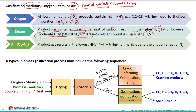When air is used as the oxidizing medium — a mixture of oxygen and nitrogen — the product gas results in the lowest calorific value gas, primarily due to the dilution effect of nitrogen. One mole of oxygen carries around 3.76 moles of nitrogen, and this nitrogen remains unaffected during the gasification process, imparting a dilution effect and resulting in the lowest calorific value gas.